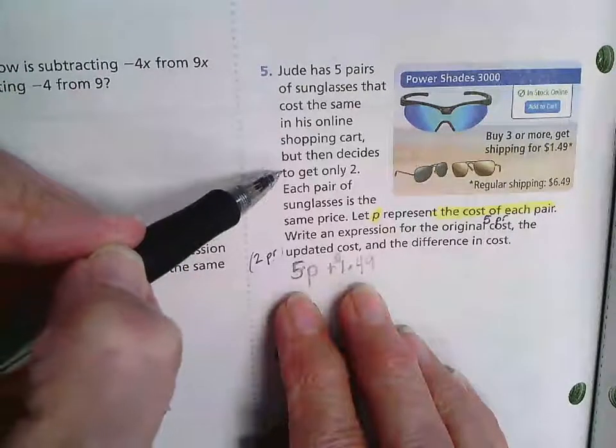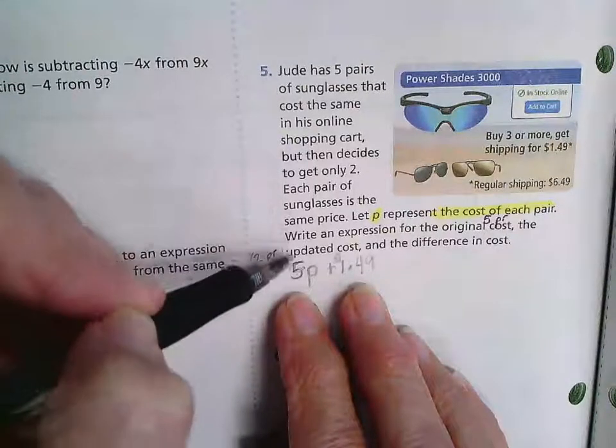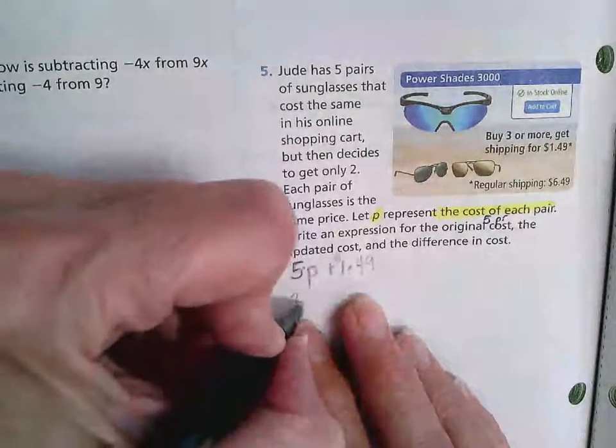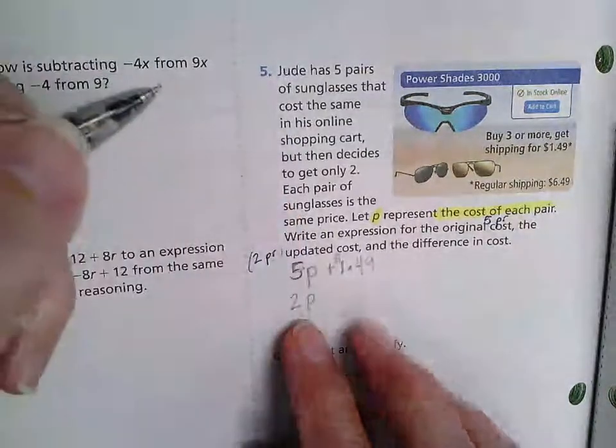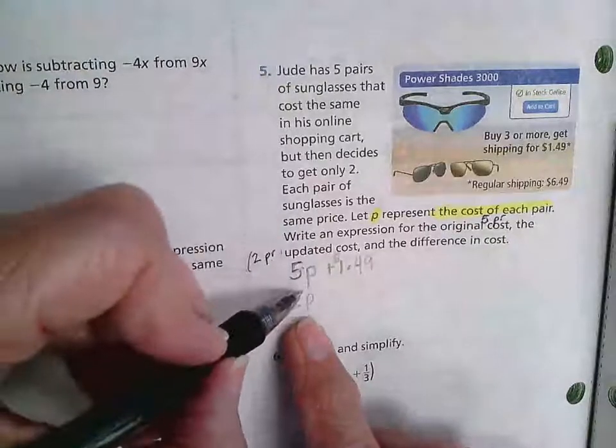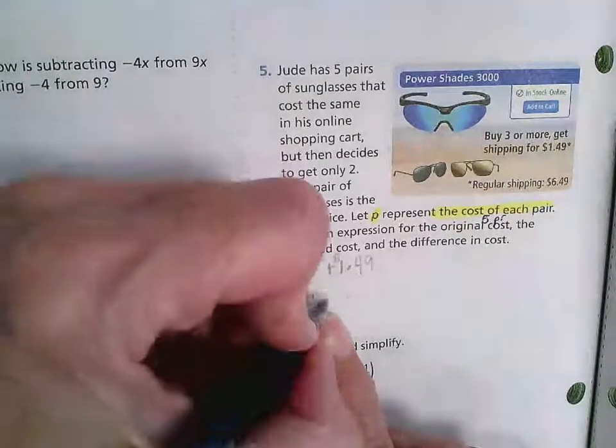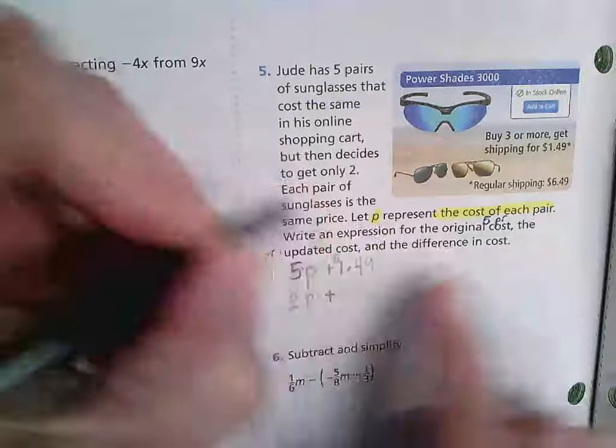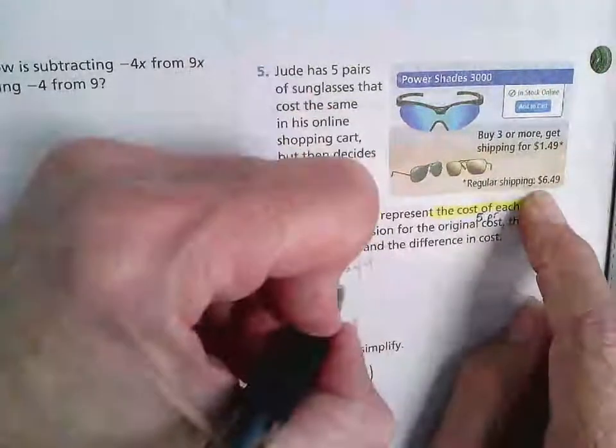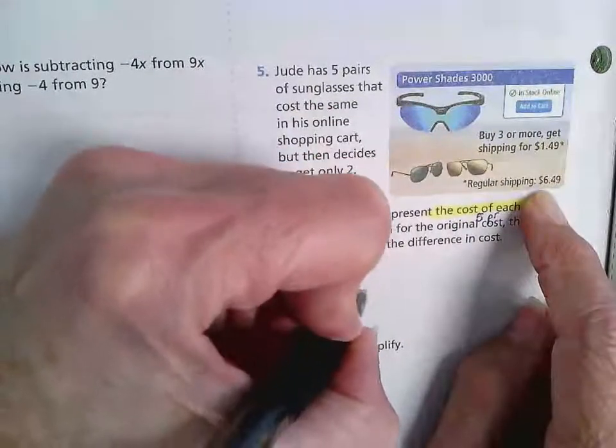But then he decides to only get two. So two pairs of sunglasses at whatever the price is. But this time, he has to add in $6.49 for shipping.